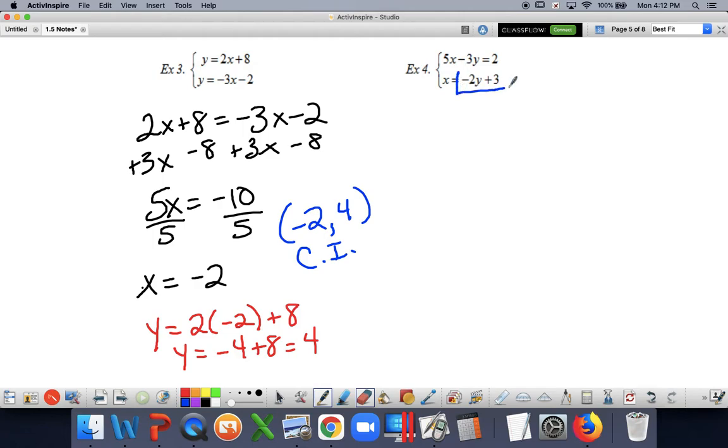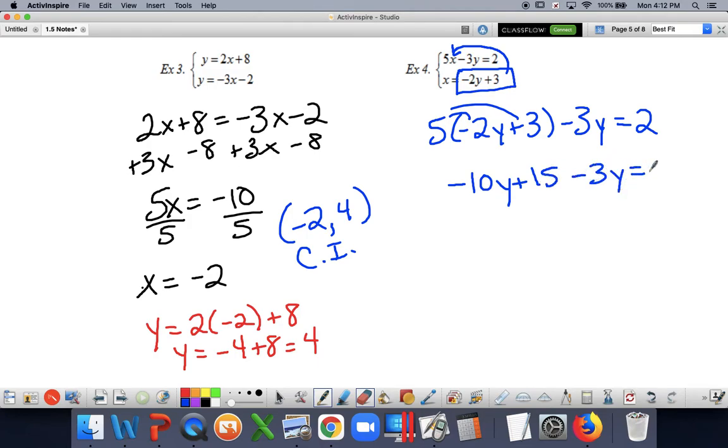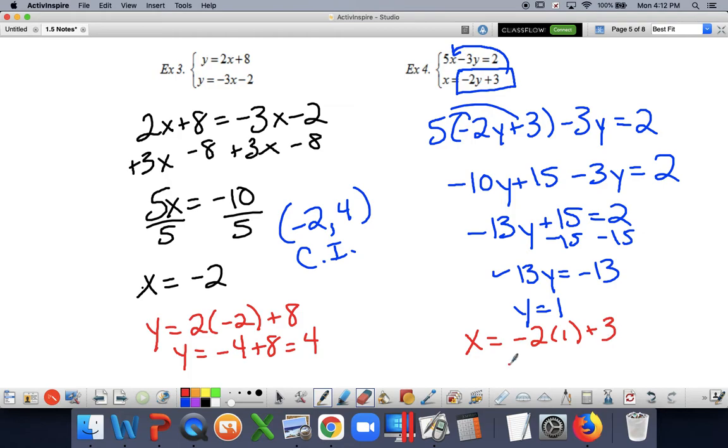This one is nice and set up for us. Our x is right there. I'm going to plug it in wherever I see an x. I'm going to distribute. I'm going to combine like terms. And I get that y is equal to positive 1. Now I'll plug that into my second equation. And I get that x is also equal to positive 1. So my solution is 1, 1, and consistent independent.